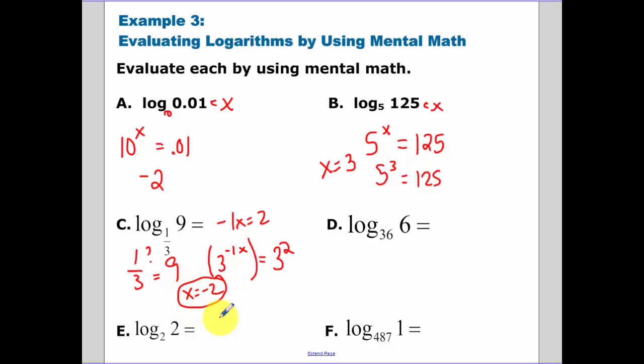36 to what power gets me 6? Well, 36 is 6 squared. Setting your exponents equal, this value is equal to 1 half.